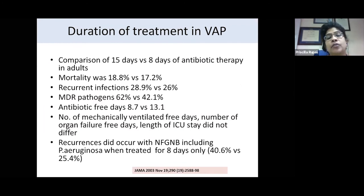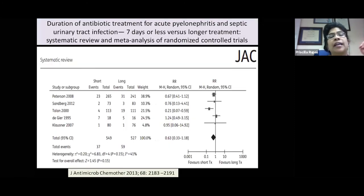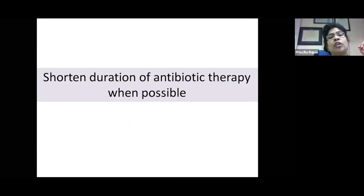The VAP study comparing 15 days versus eight days showed no difference in mortality, recurrence, MDR pathogen rates, antibiotic-free days, or ventilator-free days. Recurrences did not occur with non-fermenting gram-negative bacteria if eight days of therapy were given. There is also a Cochrane meta-analysis supporting shorter duration for hospital-acquired pneumonia and UTIs. Shortening antibiotic duration is only possible when you make a firm diagnosis, send appropriate cultures, and are confident of the organism — then step down therapy based on clinical judgment.